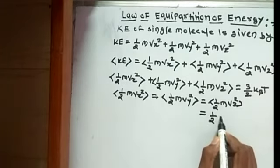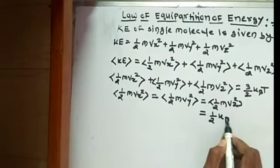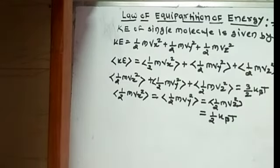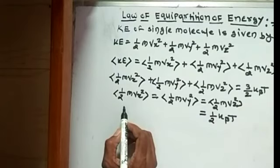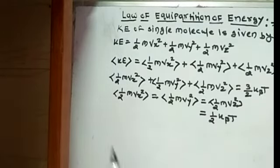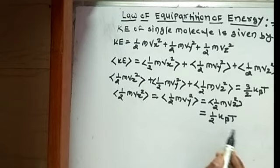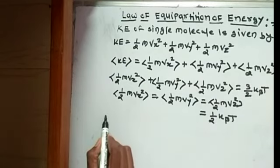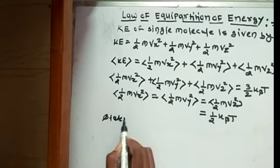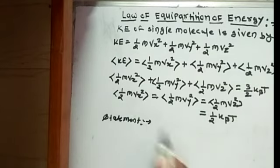That means for gas in thermal equilibrium at temperature T, the average energy associated with each quadratic term in the energy of molecule is 1 by 2 kBT, and this is the statement of law of equipartition of energy.